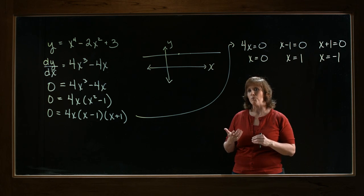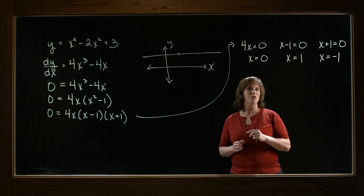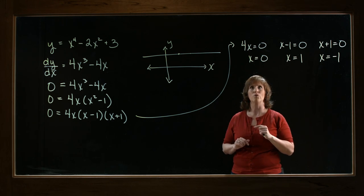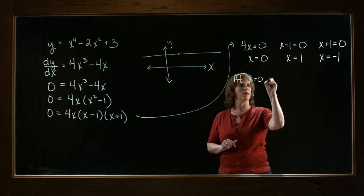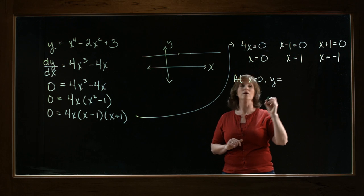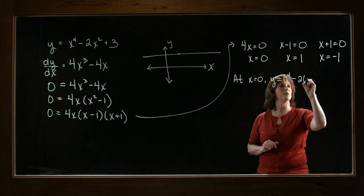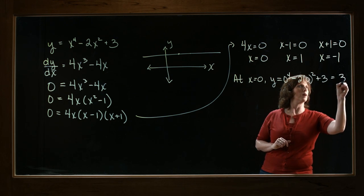Now, the question did ask for the point, so I probably should give you the ordered pair. All you need to do to find the ordered pair is plug each of these individual points into the original problem. So at x equals 0, y is going to be 0 to the fourth minus 2 times 0 squared plus 3, which is 3.